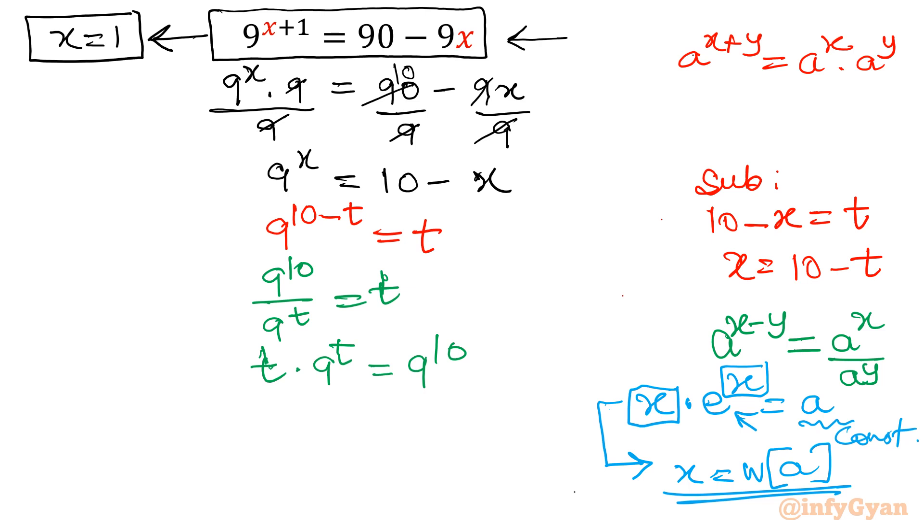So I will write 9 power t as e raised to the power ln 9 and that t would be here. Change of base. This t is as it is. The remaining terms are as it is.